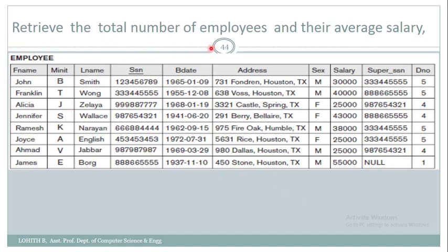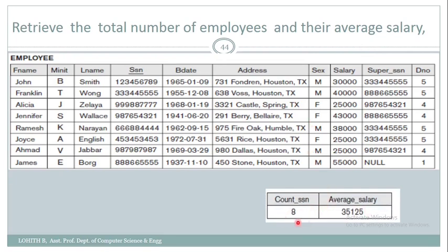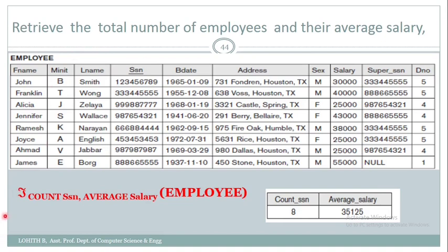Next problem: retrieve the total number of employees and their average salary. Here I need the total number of employees — using count — and the average salary — using average. The expected output is total number of employees and the average salary. In this case, since there is no grouping attribute, the aggregate functions are applied to the entire relation. Count SSN returns the total number of rows — eight employees — and average salary returns the average of all salaries. This is aggregate function and grouping attribute using script F.